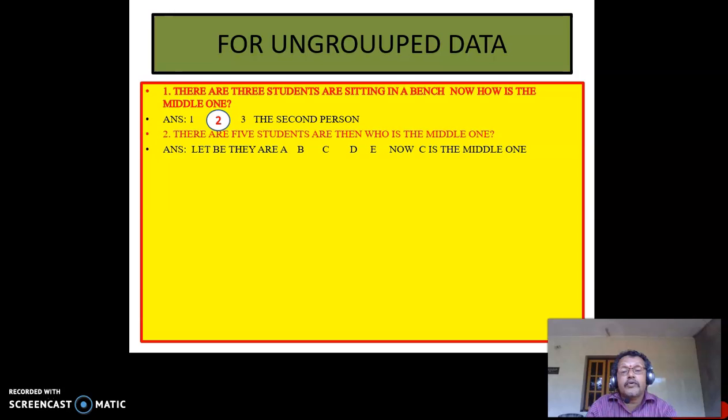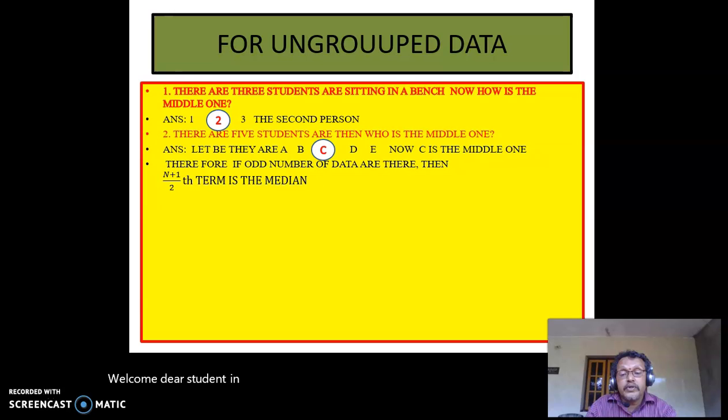Therefore, if five students are there - A, B, C, D, E - then C is the middle one, the third person. If odd numbers of data are given, then n plus 1 by 2 term is the median.